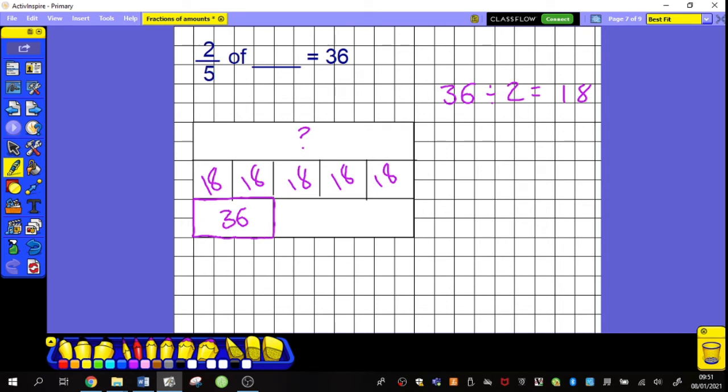Once I've done that, I'm going to do exactly the same as I did in the last question. I've known one part is eighteen. I've got five parts in total to make my whole. To find the whole, I'm going to do eighteen times five and then ninety. My whole must be ninety. Two-fifths of ninety equals thirty-six.